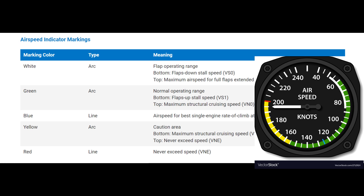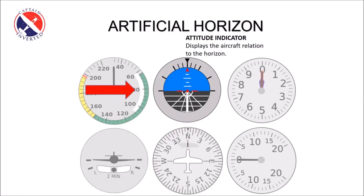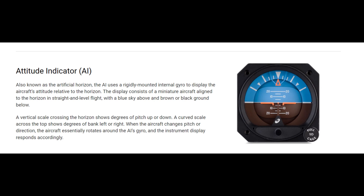The attitude indicator is also known as the artificial horizon. It displays the aircraft attitude in relation to the horizon.